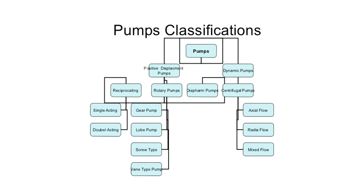Pumps are classified into two main types: positive displacement pumps and dynamic pumps. Positive displacement pumps include reciprocating and rotary pumps. Dynamic pumps include diaphragm pumps and centrifugal pumps. The main difference is that in a centrifugal pump we can vary the pressure, whereas in a positive displacement pump the pressure output remains the same.